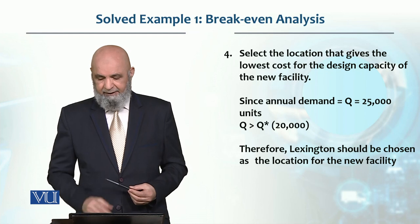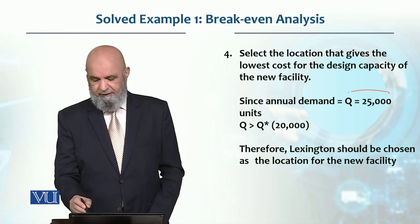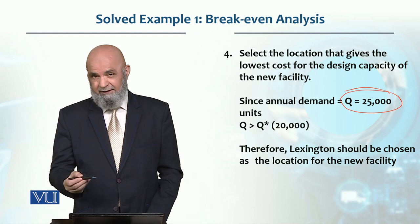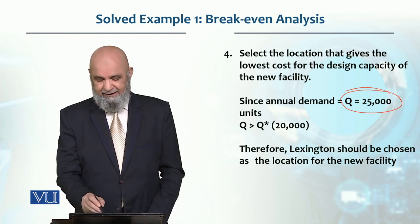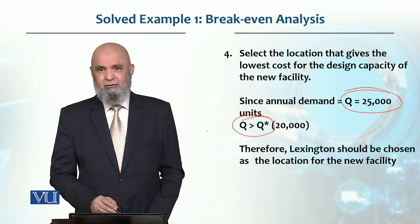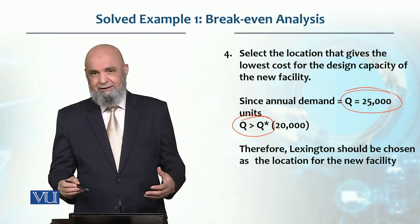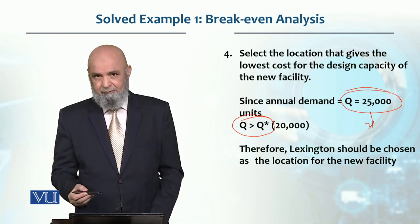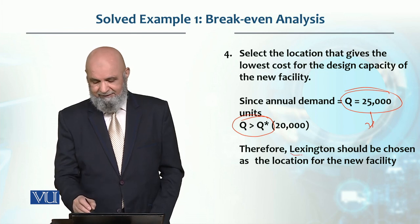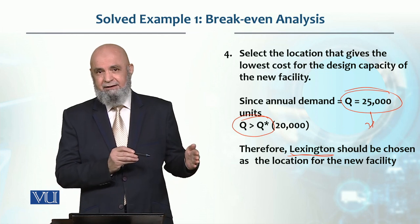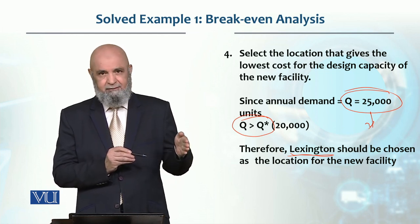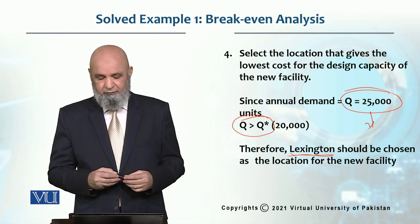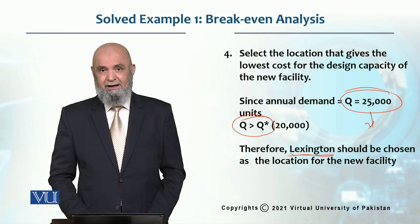Now looking at this, our sale forecast is 25,000 units. We said 25,000, whereas 20,000 is the break-even point — that means Q is greater than the break-even point of 20,000. At this point, the location providing lower cost is Lexington. So Lexington provides lower cost for a sale forecast of 20,000 and above, and since our sale forecast is 25,000, we will opt for Lexington and not Wilmore.